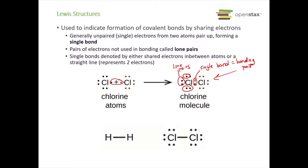In a Lewis structure there are two ways to denote a single bond: you can show the two electrons between the atoms as dots, or more commonly, you use a single line between the two atoms, where that line represents the two electrons. Another example is H2. Hydrogen is an exception — it doesn't want eight electrons; it just needs two because it only has the s shell with one electron. So two hydrogens share two electrons with each other.